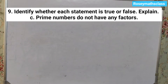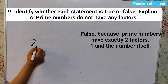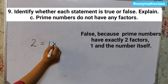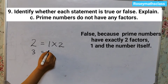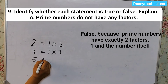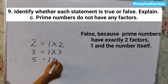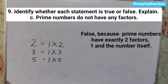Next one: prime numbers do not have any factors. False. Because prime numbers have exactly 2 factors — 1 and the number itself. 2 is a prime number, factors are 1 and 2. 3 is a prime number, factors are 1 and 3. 5 is a prime number, factors are 1 and 5. So they have exactly 2 factors, 1 and the number itself.